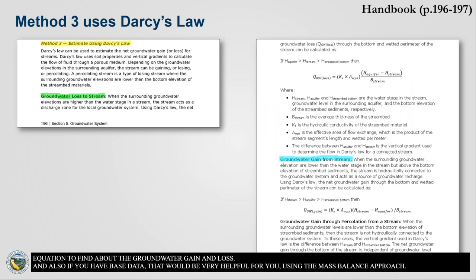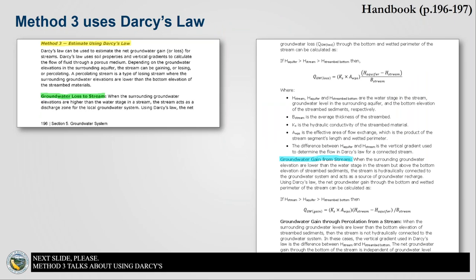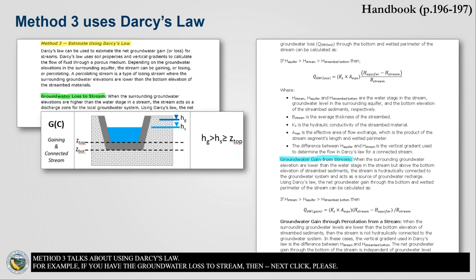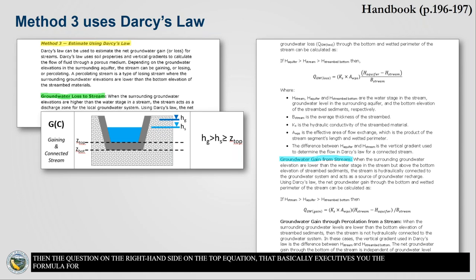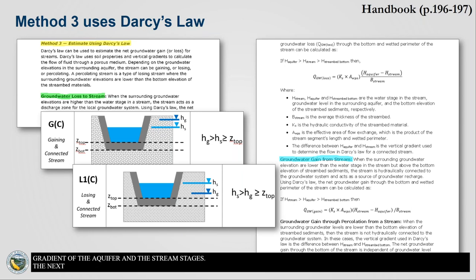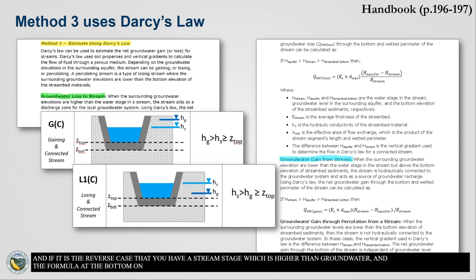Method three uses Darcy's Law. If groundwater is above the stream stage — losing to the stream — the formula uses conductivity to the streambed, the area of the wetted perimeter, and the gradient between the aquifer and the stream stage. If the stream stage is higher than groundwater, a different formula applies, found on pages 196 and 197 of the handbook. These formulas allow calculation of the stream-groundwater exchange depending on the connectivity condition.